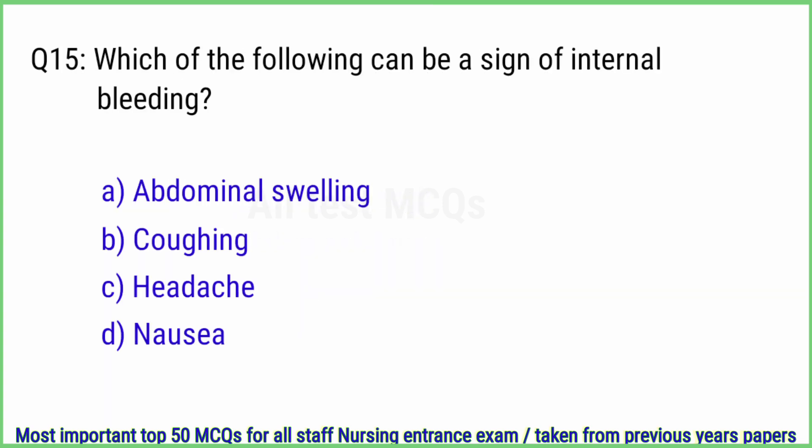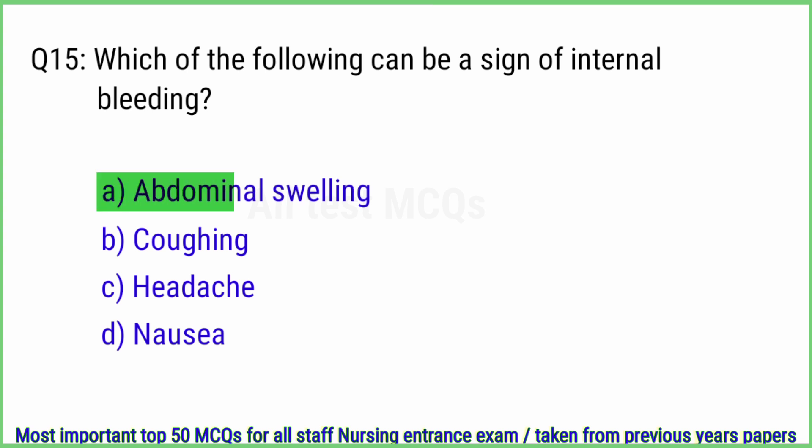Q15. Which of the following can be a sign of internal bleeding? The right answer is option A, abdominal swelling.